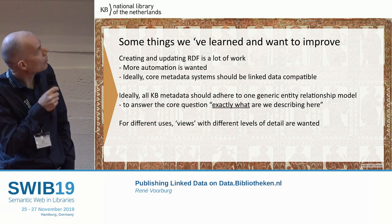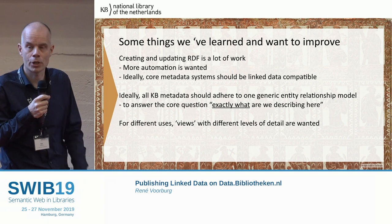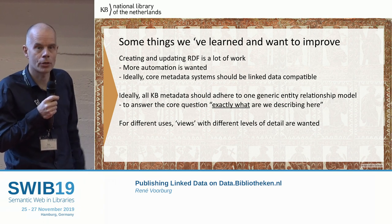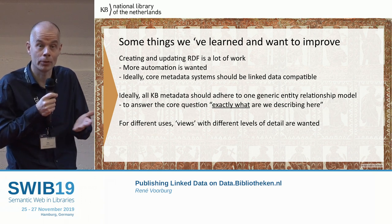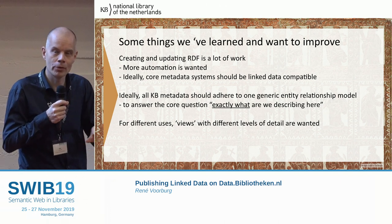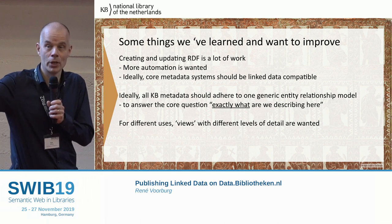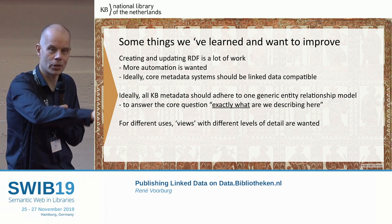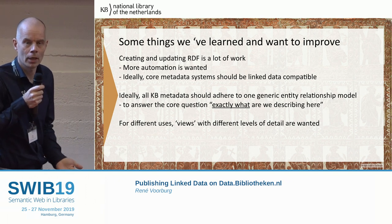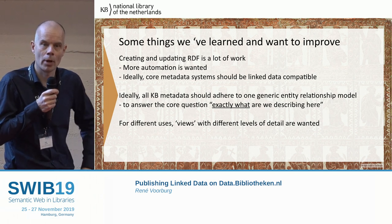But I'm only talking about the catalog — there's also data from other systems we want to publish, and the same goes for those. The data in those systems should also be mappable to RDF. And when we have different systems, we want to be able to interconnect them and know when this system talks about resource A, is it the same resource as another system talks about? Basically what we need is a unified data model for all the data we want to publish at the KB.